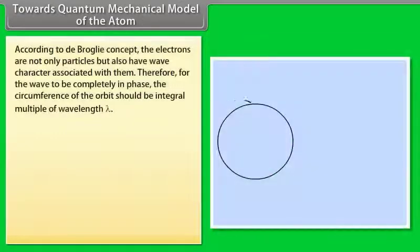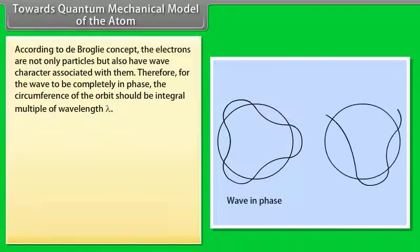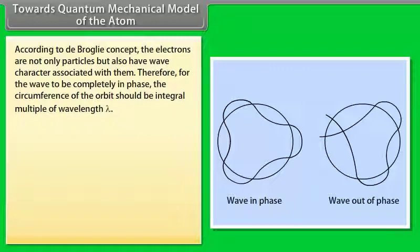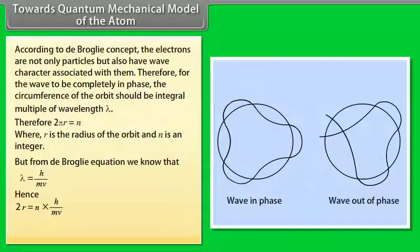According to the de Broglie concept, electrons are not only particles but also have wave character associated with them. For the wave to be completely in phase, the circumference of the orbit should be an integral multiple of wavelength lambda. From the de Broglie equation, lambda equals h upon mv. Hence, 2 pi r equals n times h divided by mv, where mvr equals n times h divided by 2 pi.